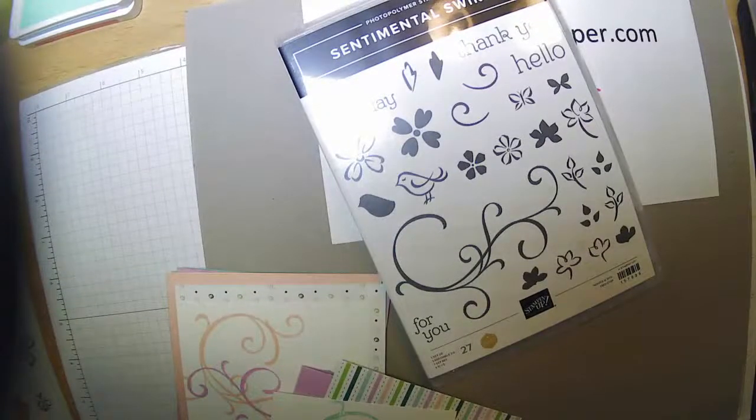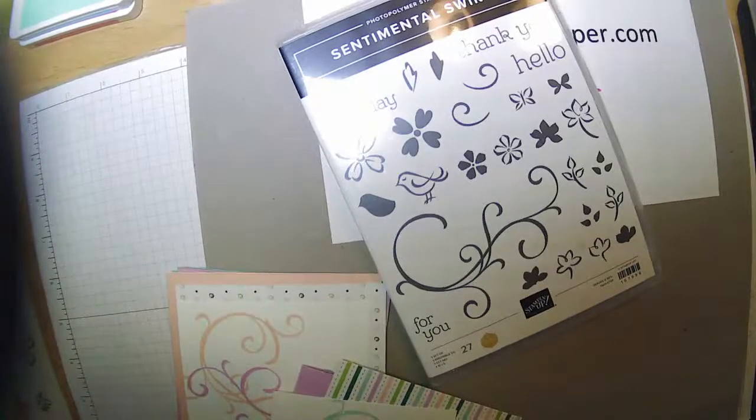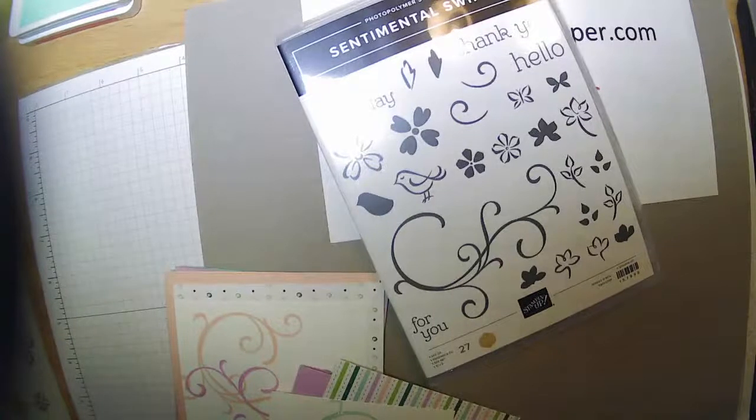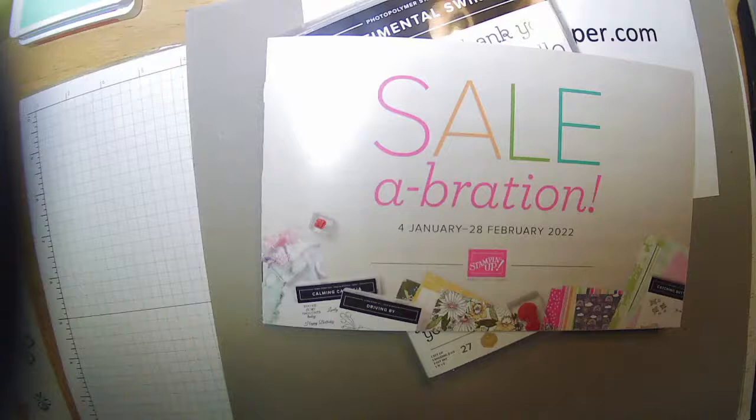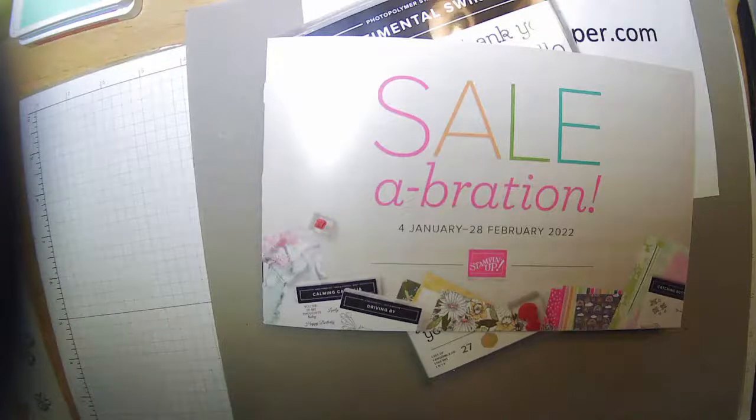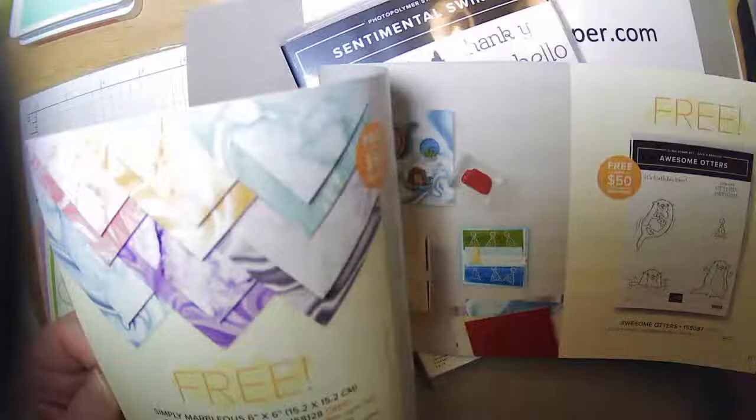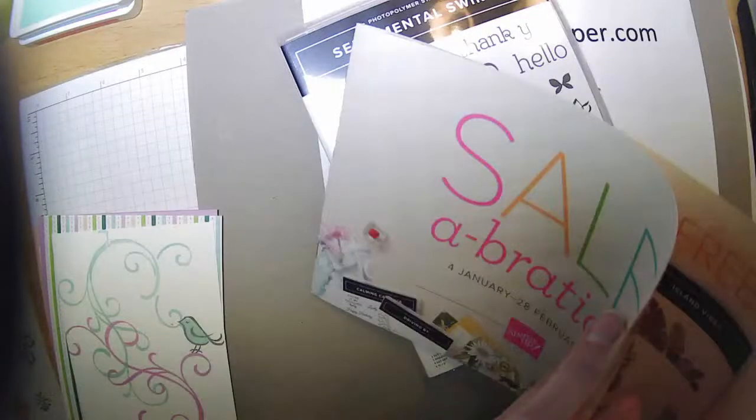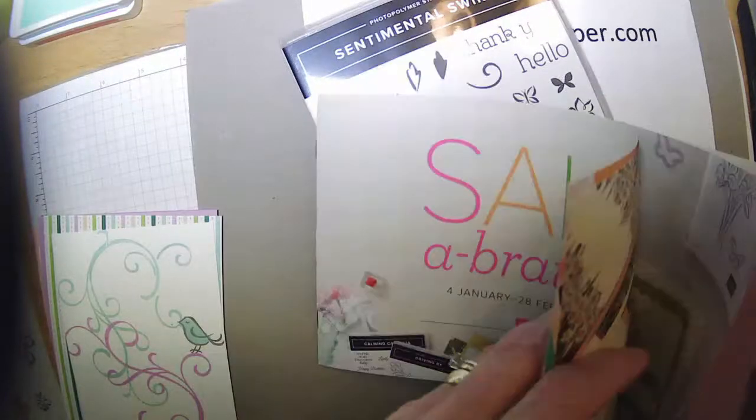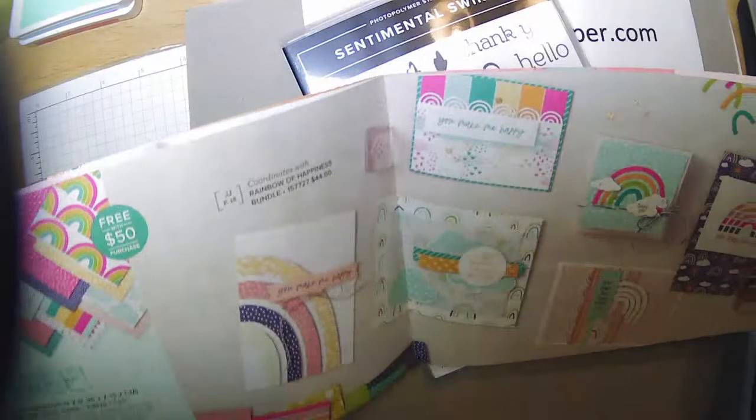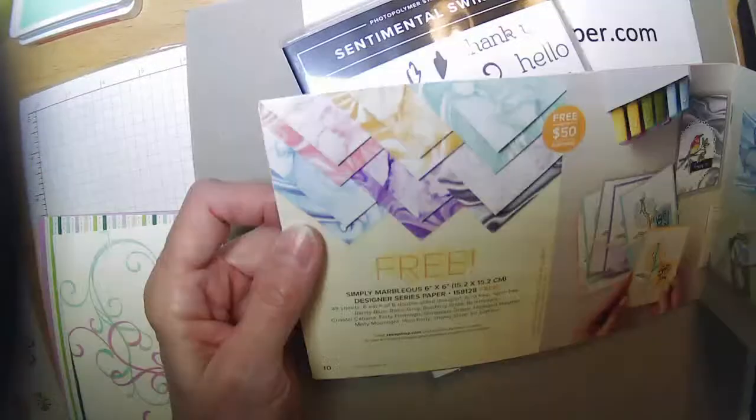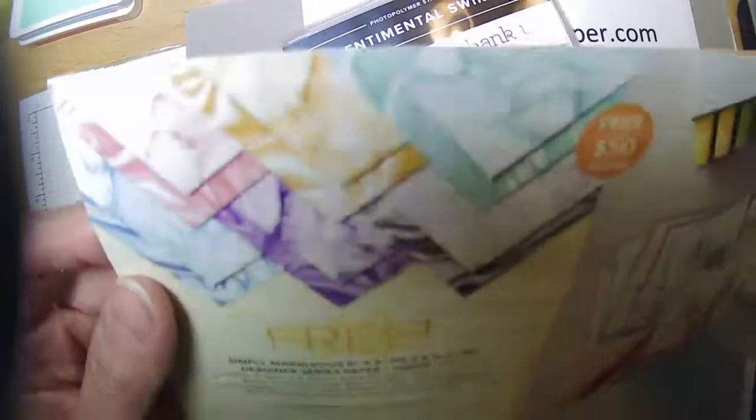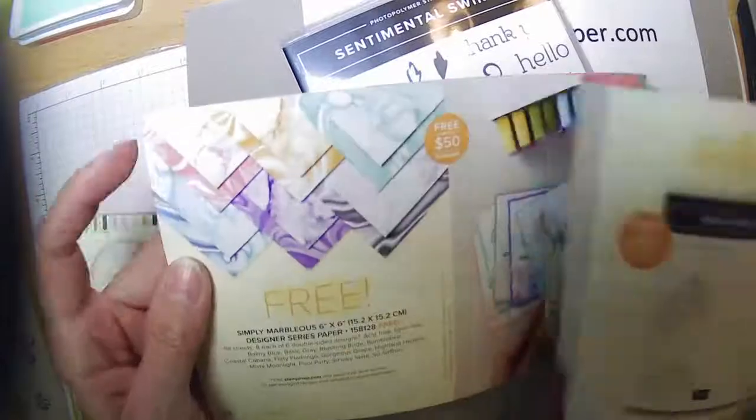And that is the new January to June mini catalog. Holler if you need one of those and I will get one out to you. Don't forget it's celebration, so when you order fifty dollars in product or one hundred dollars in product, you'll be able to pick some free stuff. I want some of that marvelous paper. Did you see that in the celebration catalog? That's neat.